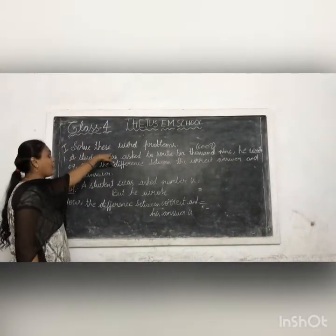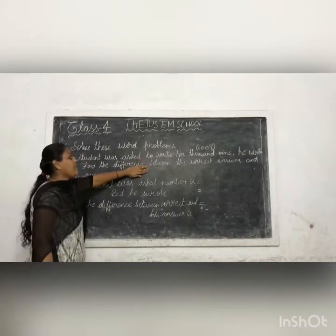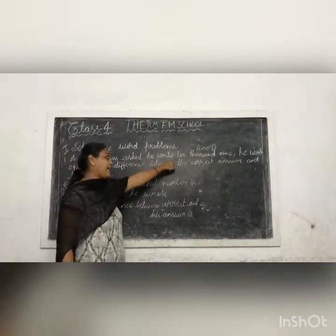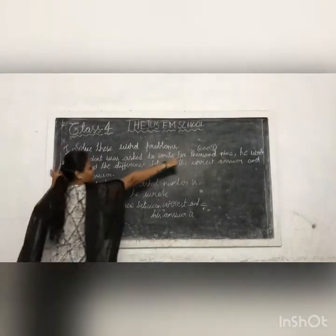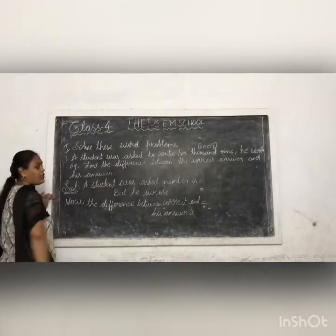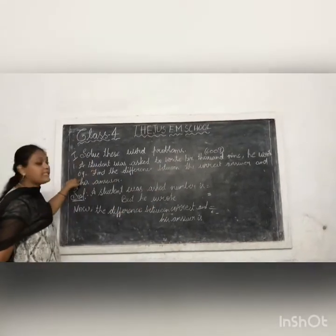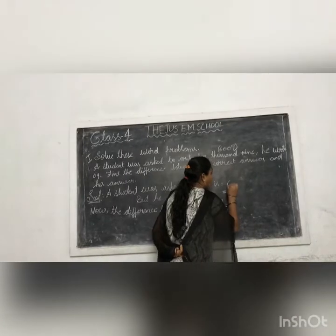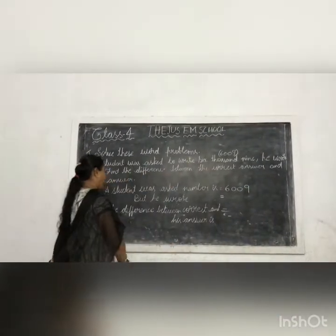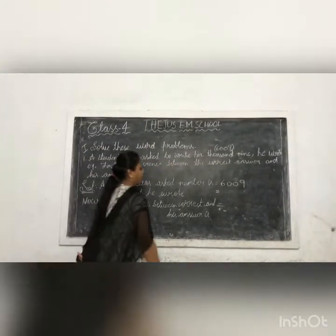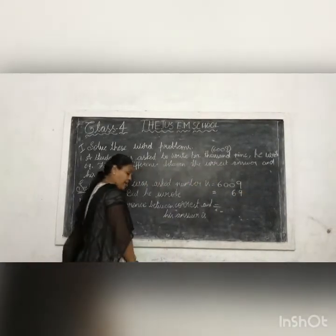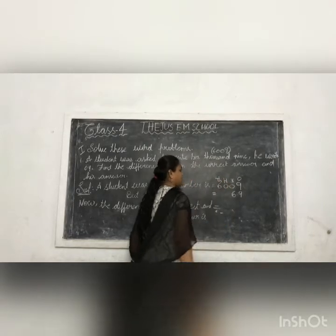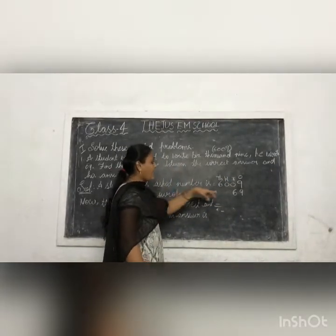Next, solve this word problem. A student was asked to write 6,009, but he wrote the number 69. Find the difference. So we will find the difference between 6,009 and 69. We write the place values: 1, 10, 100, 1000. 6,009 has 4 place values, but 69 has only 2 place values — it is a 2-digit number with place values 1 and 10. We will write the place values aligned and calculate.